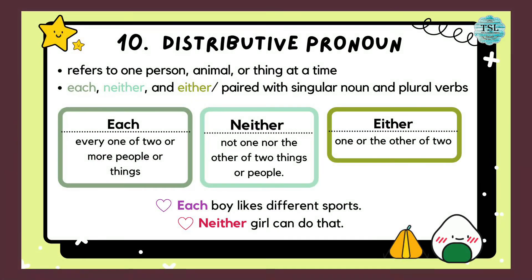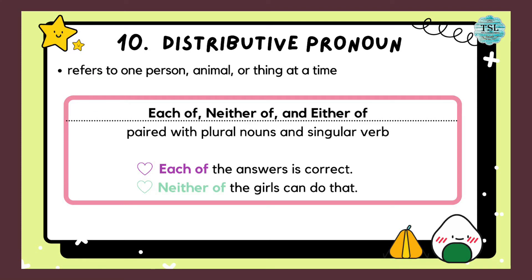And now here we are at the last type of pronouns: distributive pronoun. Distributive pronoun refers to one person, animal or thing at a time. This type includes each, neither and either, paired with singular noun and plural words. Each means every one of two or more people or things when you are thinking about them separately. Neither means not one nor the other of two things or people. And either means one or the other of two. For example: each boy likes different sports. Neither girl can do that. But if it is each of, neither of and either of, they are paired with plural nouns in singular verb. For example: each of the answers is correct. Neither of the girls can do that.